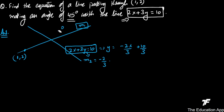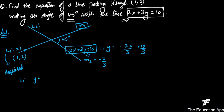Diagrammatically, the angle between the two lines is 45 degrees. The required line L1 passes through (1,2), so its equation takes the form: (y - 2)/(x - 1) = m1. If we find m1, we can write the equation of the line.